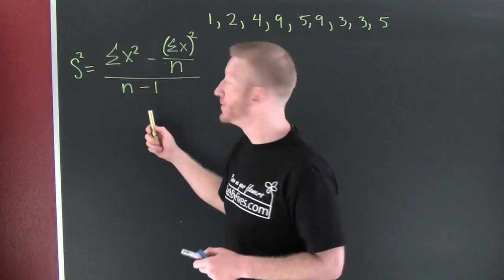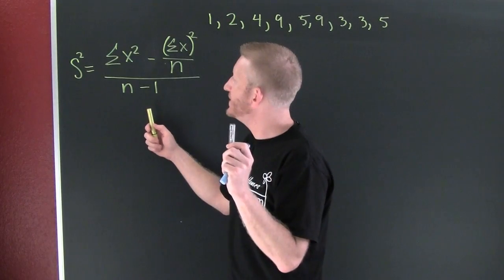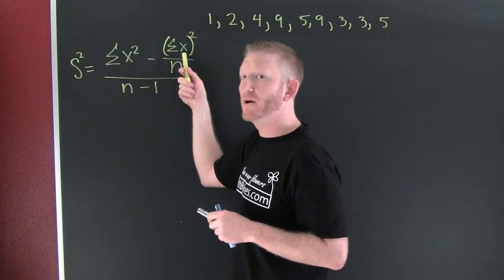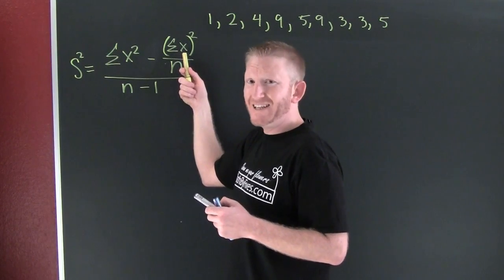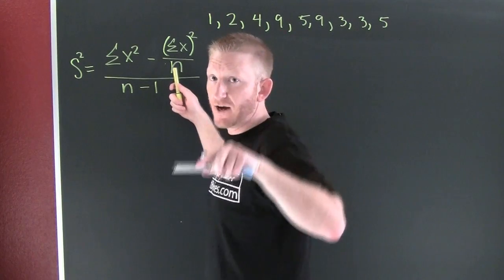Now this is the variance of a sample. Okay, let's go through and let's find this. What do we need to find? We need to find the sum of the squares and we need to find the sum of the values. And then we need to know how big our sample size is. So let's go and let's find these things.